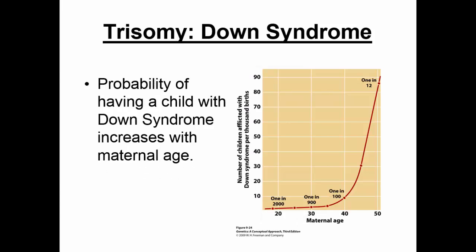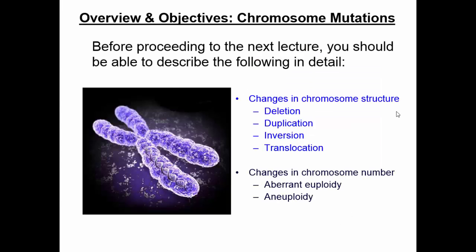This diagram shows maternal age and Down syndrome risk. If a human female is around 20 years of age, her odds of having a child with Down syndrome are about 1 in 2,000. A decade later it's about 1 in 900 — still pretty low. When that same woman is 40 years old, her chances are 1 in 100 — a 1% chance, but much higher than earlier in her lifetime. After age 30 we see an exponential increase, and by age 50 it's about 1 in 12. Most likely this is due to an increased rate of nondisjunction. That's today's lecture on chromosomal mutations, focusing on changes in structure and changes in number.